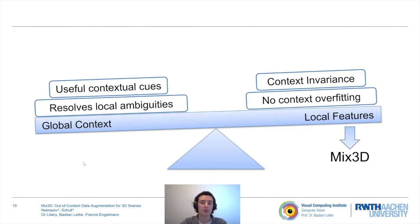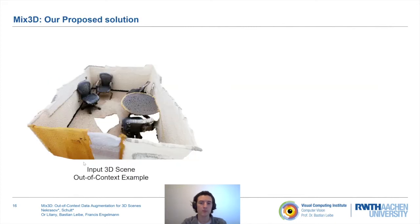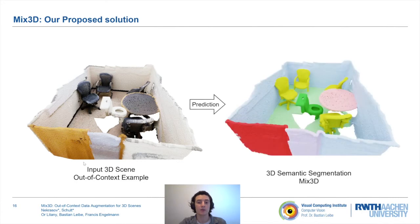Going back to our example of the conference room, we are now able to correctly predict objects placed in out-of-context environments. A toilet remains a toilet even placed in the middle of a conference room.